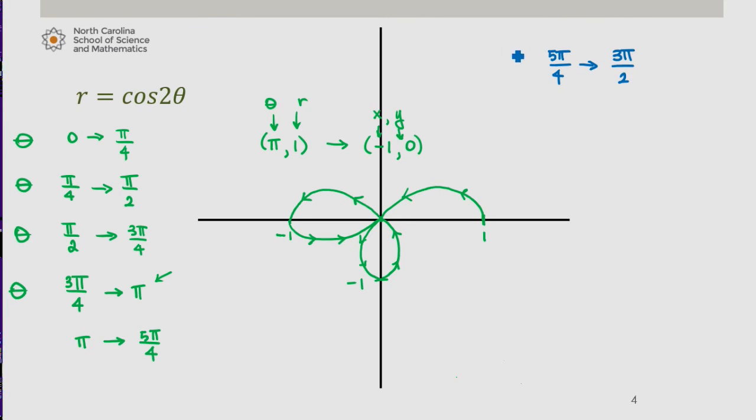Now you may be wondering why I'm choosing these theta values. They're essentially the theta values that give me points at which my r value is 0 or 1 or negative 1. And that allows me to at least connect the points knowing the orientation of the curve.